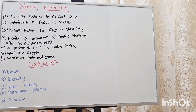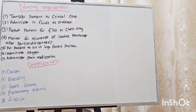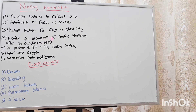Now let's talk about nursing interventions for cardiac tamponade. Transfer the patient to critical care settings if they are not already there. Administer IV fluids as ordered. Prepare the patient for echo or chest X-ray, and monitor for reoccurrence of cardiac tamponade after pericardiocentesis.